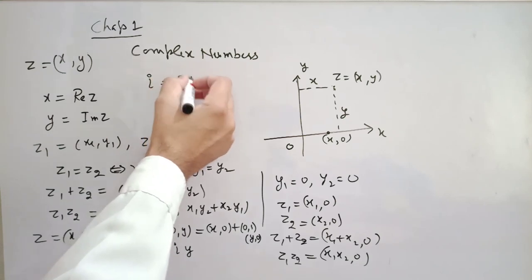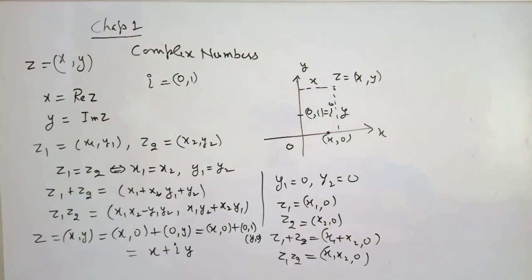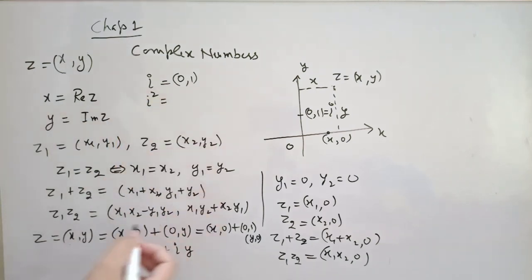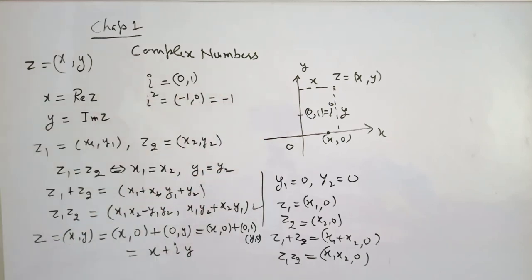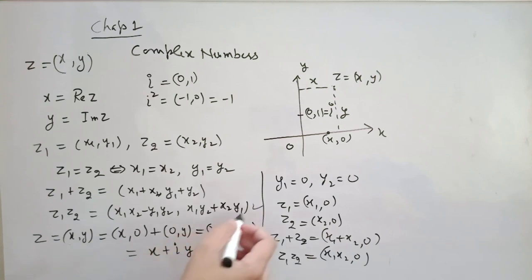The ordered pair (0, 1), denoted iota, lies on the y-axis and is a purely imaginary number. Following the definition of multiplication, you can check that iota squared equals (−1, 0), which means iota² = −1. This is how iota enters complex numbers. We will use this simplified notation — x + iy — going forward.